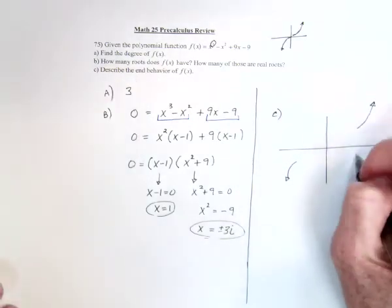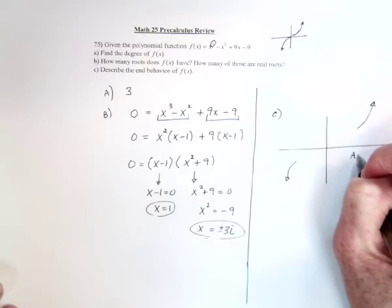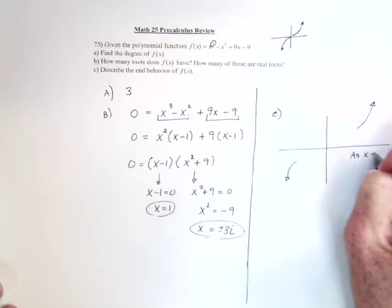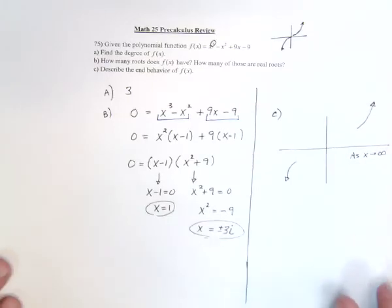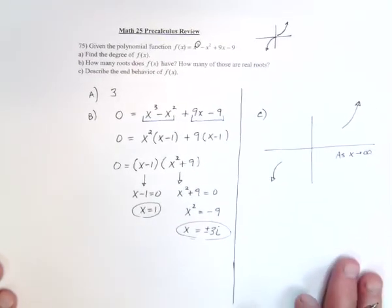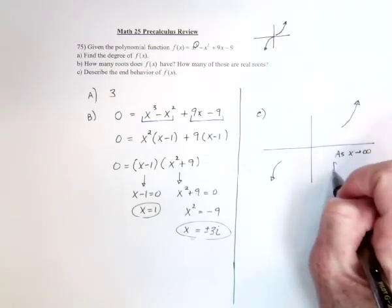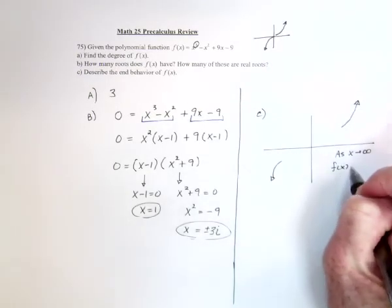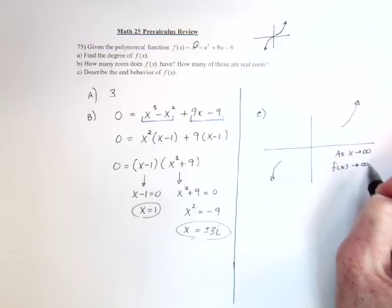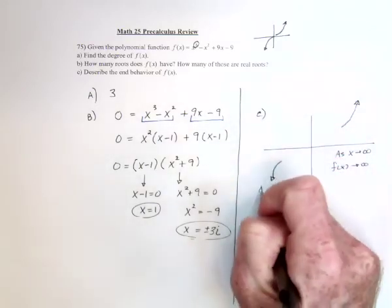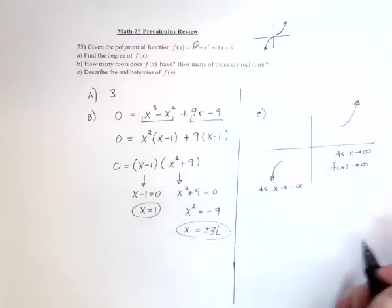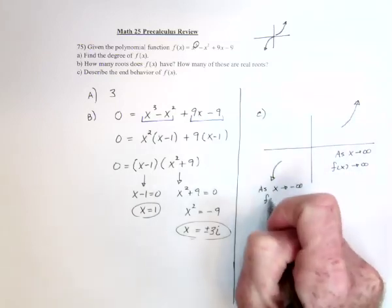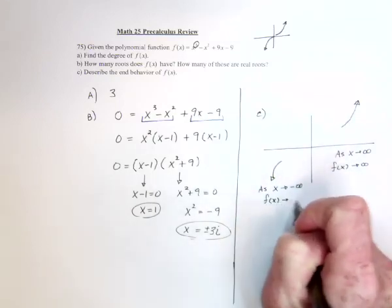So, then, on this side, I would say, as x goes to the right, which we say, as x goes to infinity, as x goes to the right, the function is going up. F of x is going up to positive infinity. And then, this one would be, as x goes off to the left, so that's negative infinity, f of x is going down.